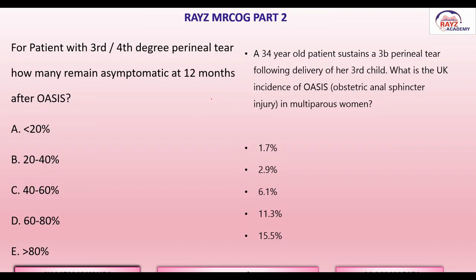Question: For patients with third and fourth degree perineal tears, how many remain asymptomatic at 12 months after OASIS? Answer: 60 to 80%. Question: A 34-year-old patient sustains a 3B perineal tear following delivery of her third child. What is the UK incidence of OASIS in multiparous women? Answer: 1.7%. For nulliparous women it is 6.1%, for multiparous it is 1.7%, and overall it is 2.9%.